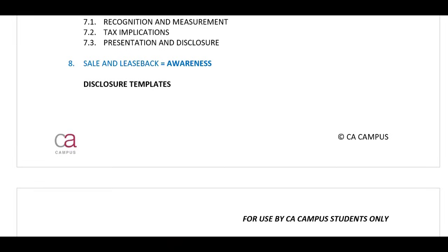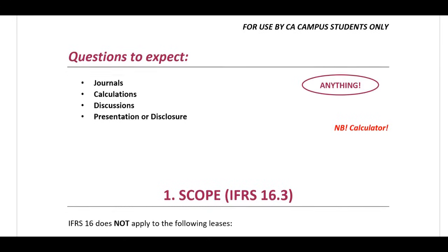I have included the disclosure notes and templates at the end of your notes for you to take off and study separately if need be. In terms of the questions that you can expect, as always, incorporate it — you can expect anything and you still need to know your IAS 12 principles very well. It is also important that you are able to use your calculator properly. In terms of leases, you need to ensure that you understand your amortization table, perform journal entries, calculations, discussion questions, and your presentation on the face of your financials and disclosure in your notes.